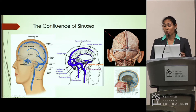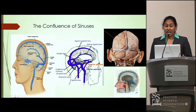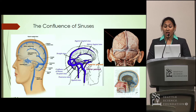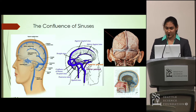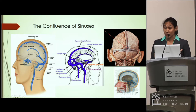Here we can see a posterior view of the confluence of sinuses and other views as well. Flow goes towards the confluence of sinuses through three sinuses — the superior sagittal sinus, the occipital sinus, and the straight sinus — whereas flow moves away from the confluence of sinuses via the transverse sinuses, which we can see on both sides.